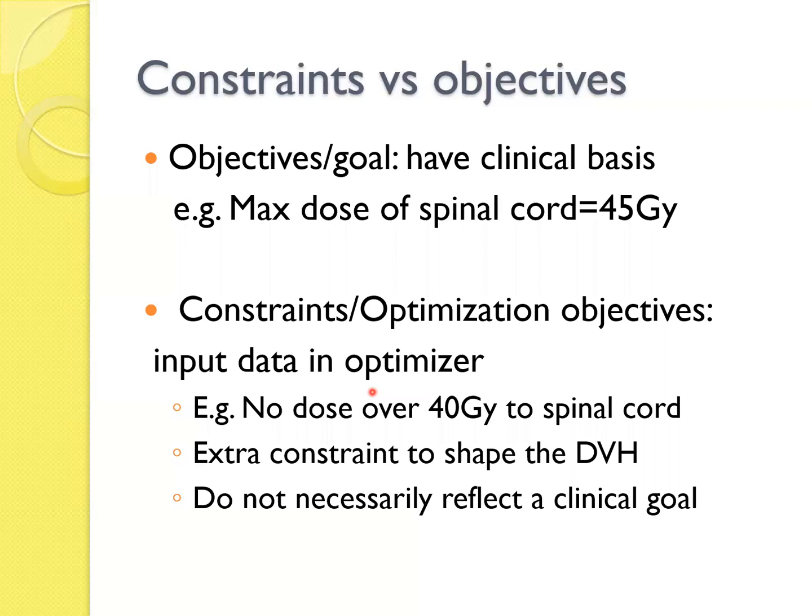So one has to be aware about the constraints versus objectives. The objectives are the goals that has a clinical basis. For example, maximum dose of spinal cord is 45 or 46, whatever your clinician is aimed for. Whereas the constraints are used to achieve these objectives. So it could vary, and it varies planner to planner.